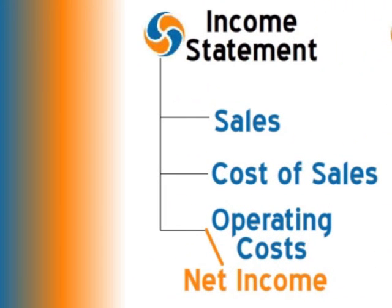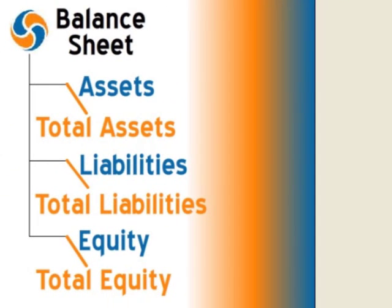Going to the Income Statement, there are essentially three types of line items: Sales, Cost of Sales, and Operating Cost — with things like Interest Expense being put into Operating Cost, even though that's not technically accurate anymore. And at the end of your Income Statement is Net Income. On the Balance Sheet, we have essentially three other categories: Assets, Liabilities, and Equity.